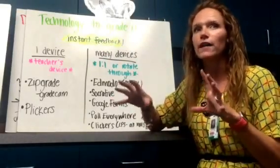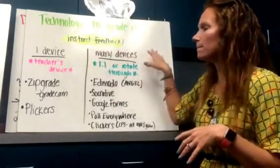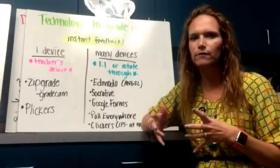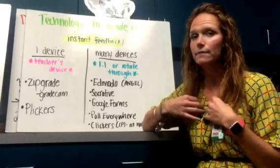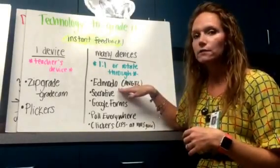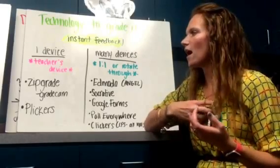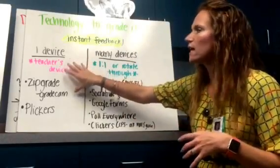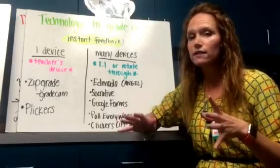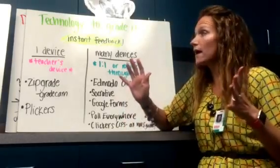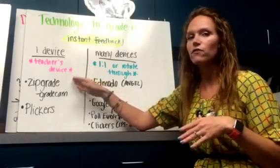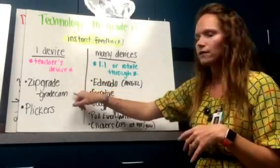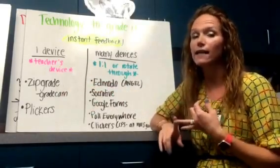There are two approaches: a one-device version and a many-devices version. I go back and forth depending on which fits my needs. When I was in the classroom, I had one-to-one iPads, so I liked using Edmodo, but I know not everyone's that lucky, so I've also really dug into ZipGrade. A one-device version is when the teacher is the only one with the device — no one else needs one. My favorite for this is ZipGrade. I've also heard of GradeCam; both utilize the device's camera. ZipGrade works on Android and iPhone.